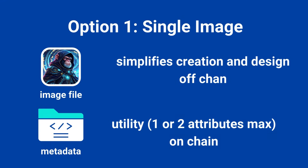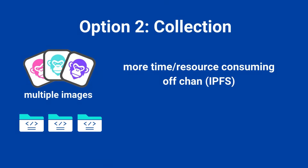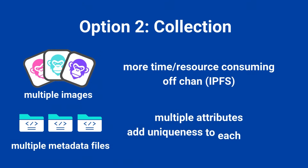Alternatively, with option two — metadata off chain — you create unique images and multiple attributes for each token. You'll need to store both the media and metadata directly on IPFS. While this adds flexibility and uniqueness to each token, the creation and design process will be more time-consuming and complex.